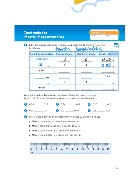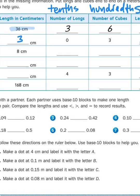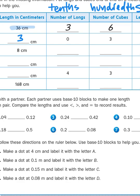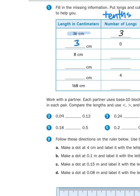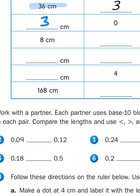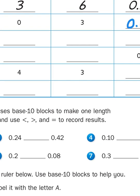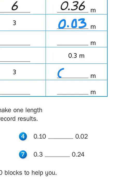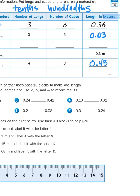For example, if I look at this example right here where I have 4 tenths and 3 hundredths, 4 tenths plus 3 hundredths gives me 43 centimeters, otherwise known as 0.43 meters. So that's how you would go about filling out that table.